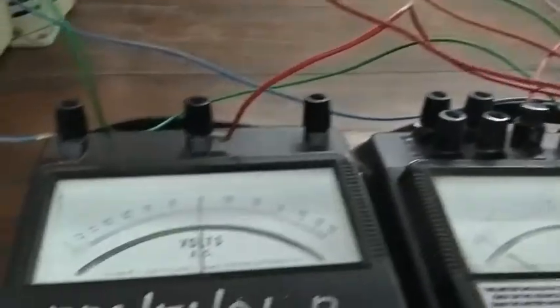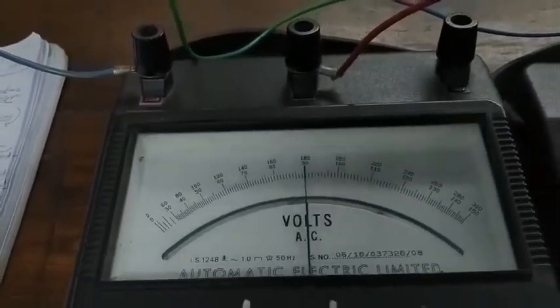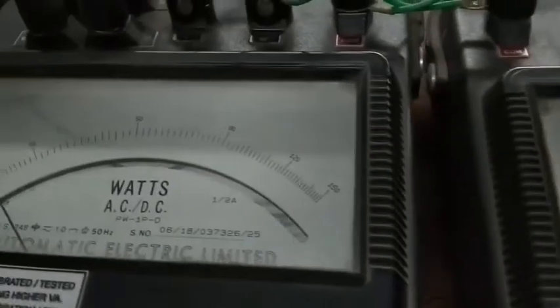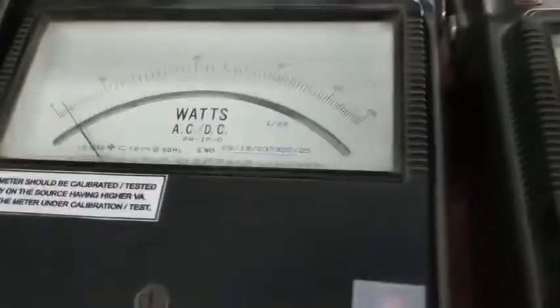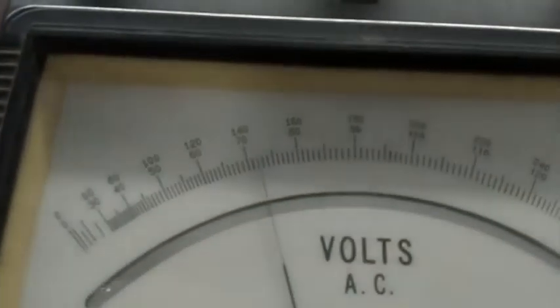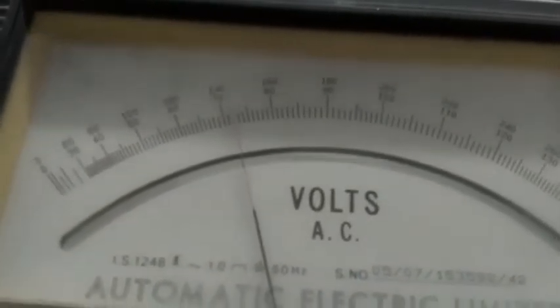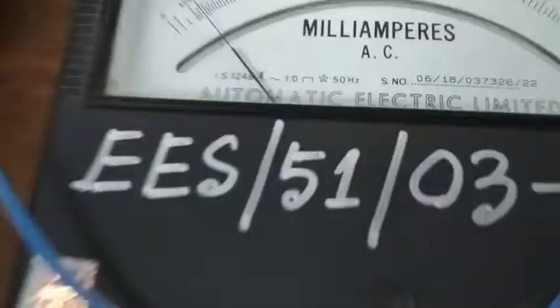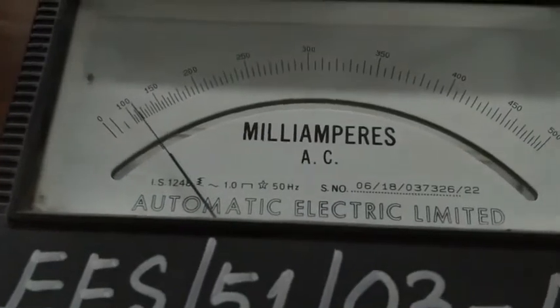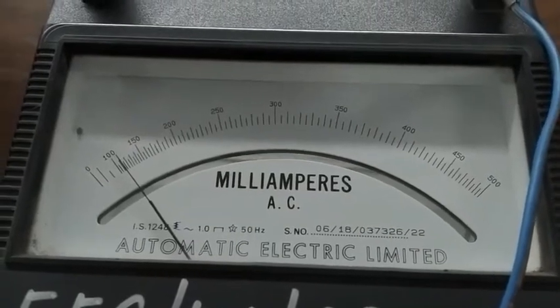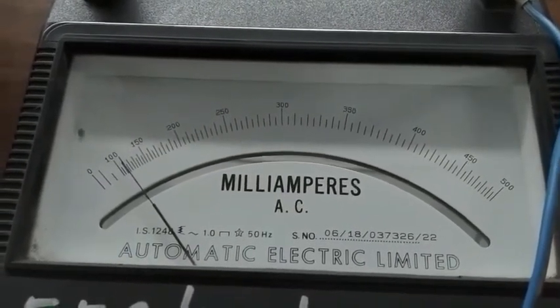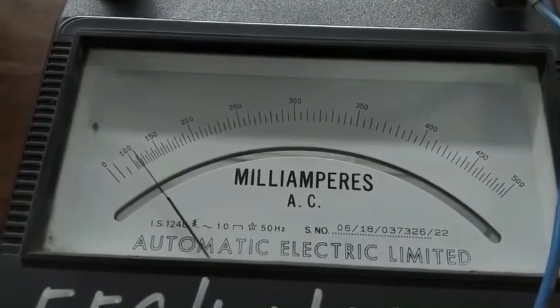Again I decrease the voltage to 184 volt. At 184 volt, wattage is 10 × 2 watt. Lamp voltage is 144 volt. Line current is 114 milliampere.